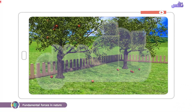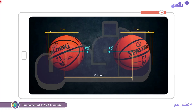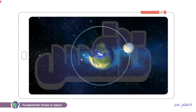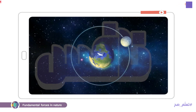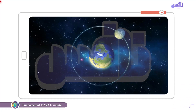شوف معايا الفيديو ده: الطفاحة دي دلوقتي ليه بتنزل على الأرض؟ Due to gravitational earth. يبقى أي two objects بيبقى فيه attraction force between these two objects. وده اللي بيخلي الأرض rotate around the sun and the moon rotate around the earth, due to the gravitational force.